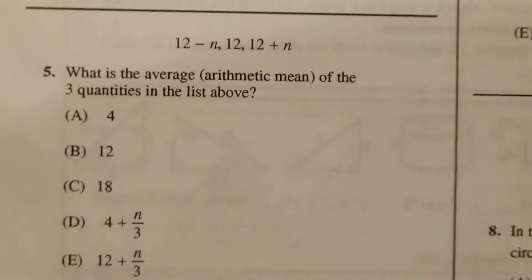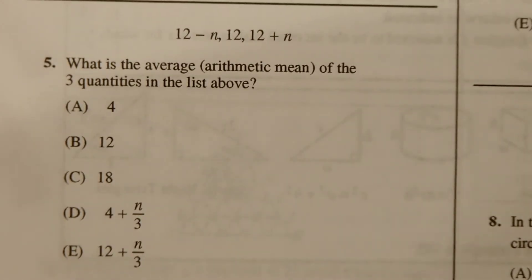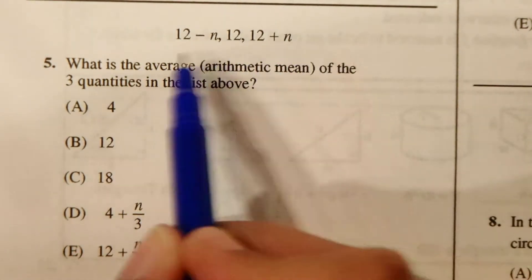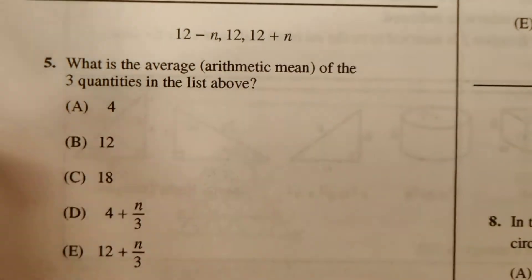Number 5. What is the average arithmetic mean of the three quantities listed above? So the mean is when you take each term, add them up, and then divide by how many terms you had.